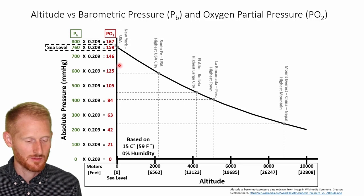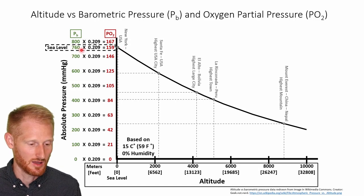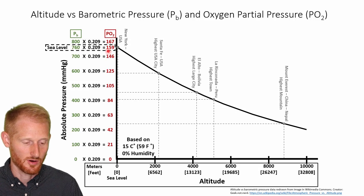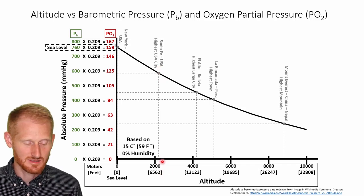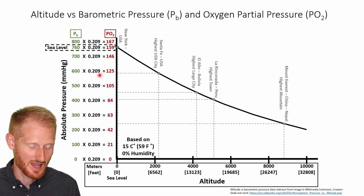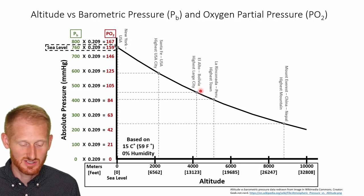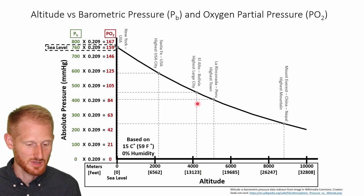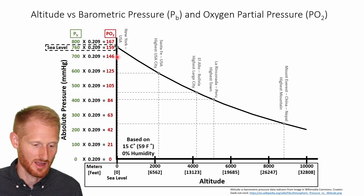Near New York City, at sea level, barometric pressure is 760 mmHg, giving a partial pressure of oxygen of 159 mmHg. Going up to Santa Fe, the highest city in the U.S. at a little over 2,000 meters (about 6,500 feet), partial pressure of oxygen drops to about 125 mmHg. Going to the highest large city in the world in Bolivia, at a little over 4,000 meters, partial pressure of oxygen drops to around 90 mmHg — dramatically less than the 159 at sea level.